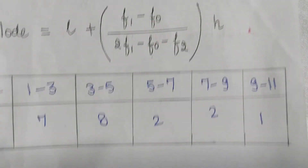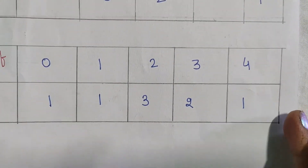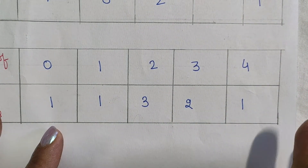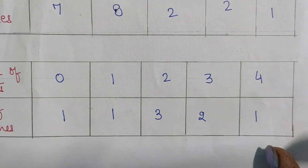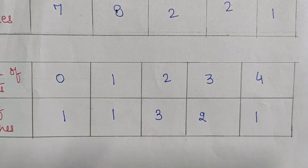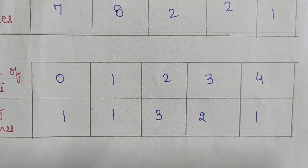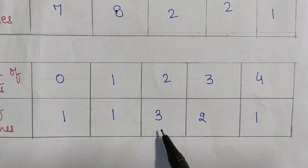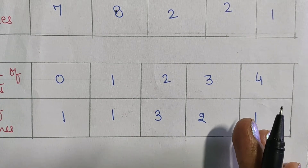Mode can have no value, one value, or more than one value. If all frequencies are the same — say all are one — then there is no mode. One value of mode is seen in our table, which is two. More than one mode occurs when two or more frequencies are equal and both are maximum, for example if two frequencies are both three.